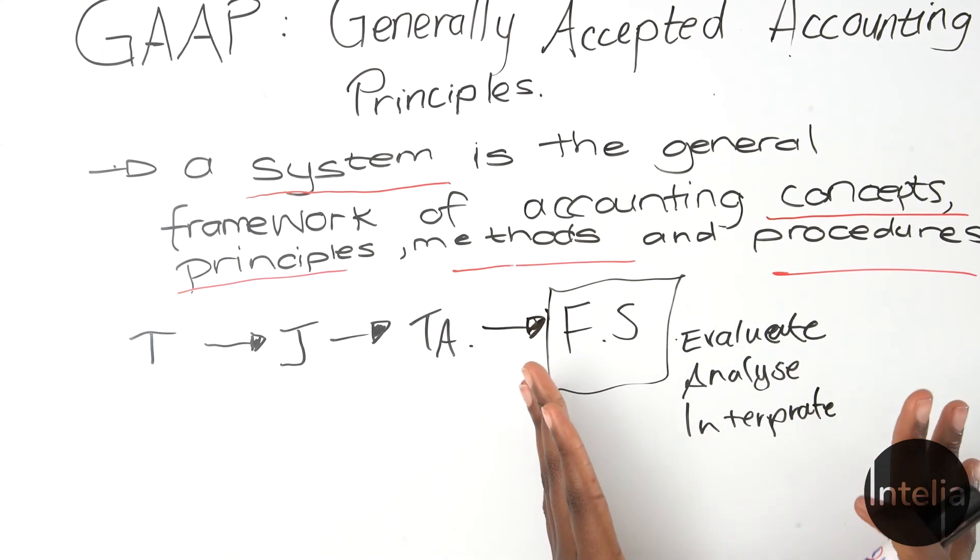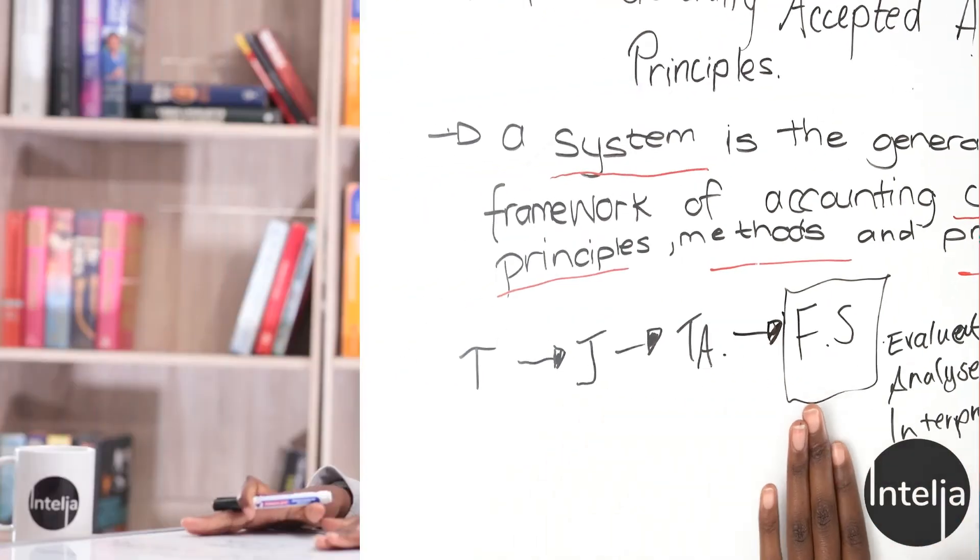Once you know the process — starting with the transaction — you know it goes through journals, T accounts, and financial statements, which is what we ultimately need to succeed with. In the next video I'm going to talk about each generally accepted principle, how it affects the accounting equation, and how to deal with each principle in your financial statements. Thank you for watching.